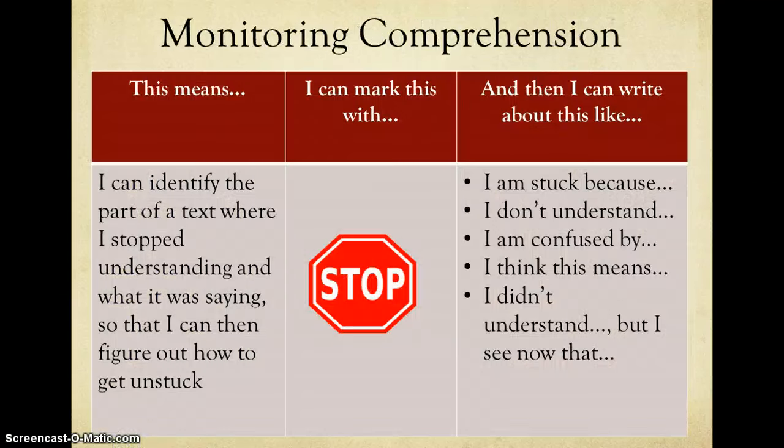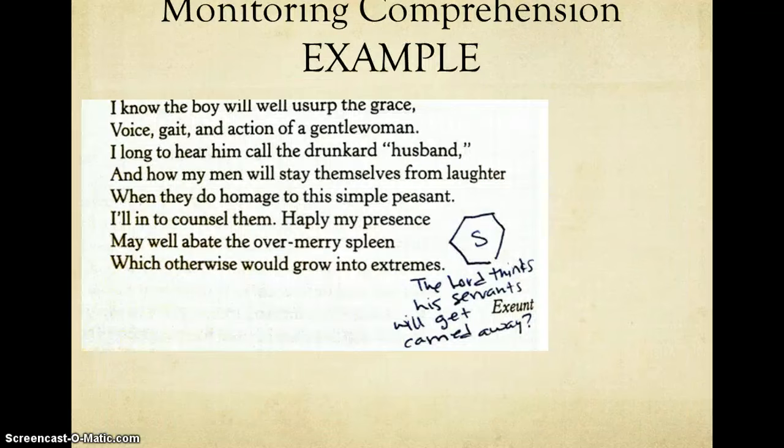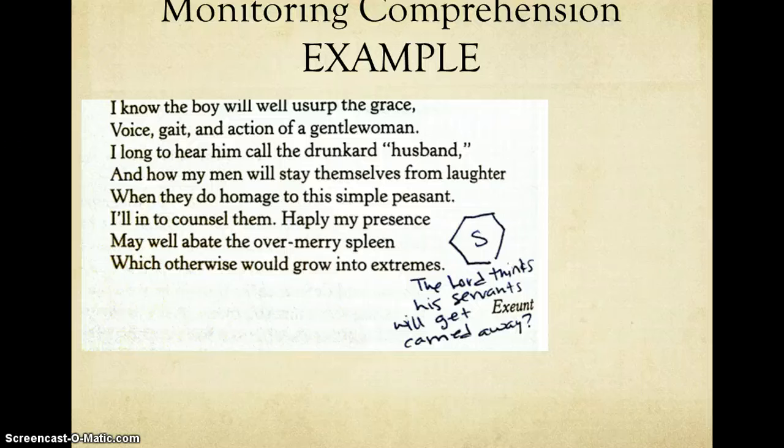Finally, we have monitoring comprehension. This is where you can identify the part of a text where you stopped understanding. And then you can figure out how to get unstuck. You annotate through the use of a stop sign, and there again are your sentence stems. My final example comes again with the Lord, and the Lord talking about the play. And so I ask a question about the Lord's opinion of his servants and how he's worried that they're going to get carried away. I'm wondering, I'm confused about why the Lord would think this.